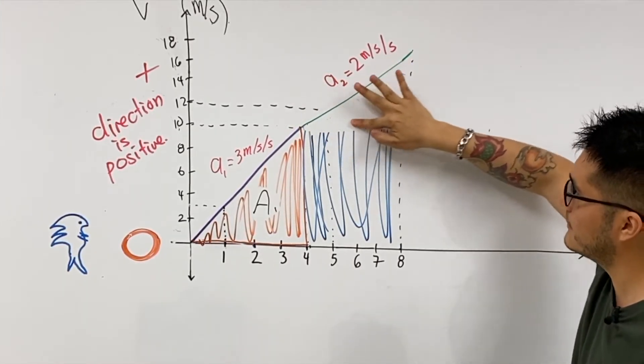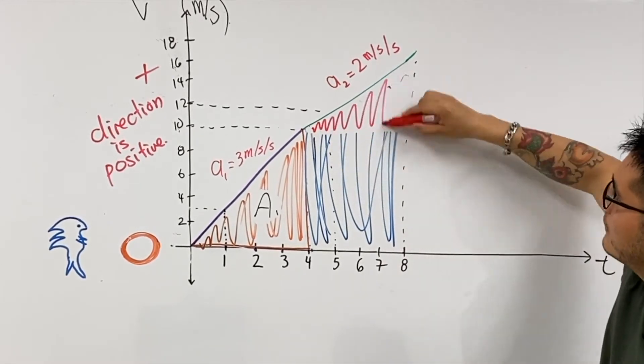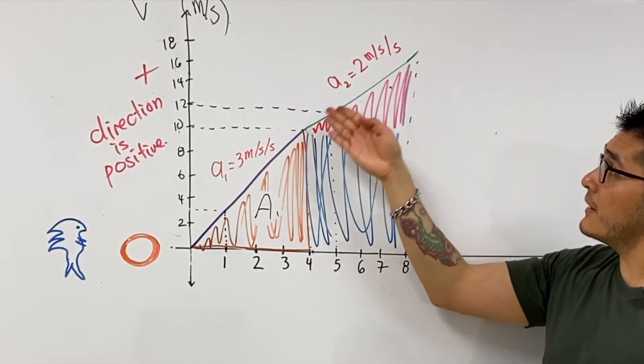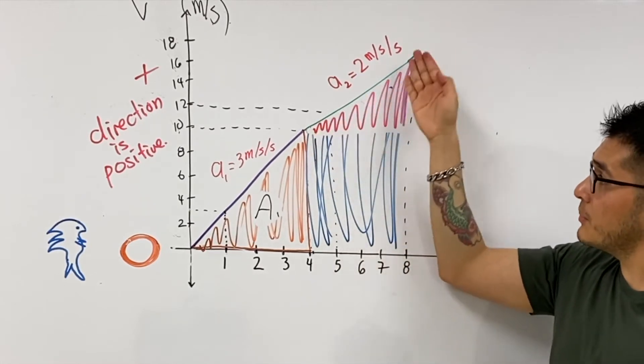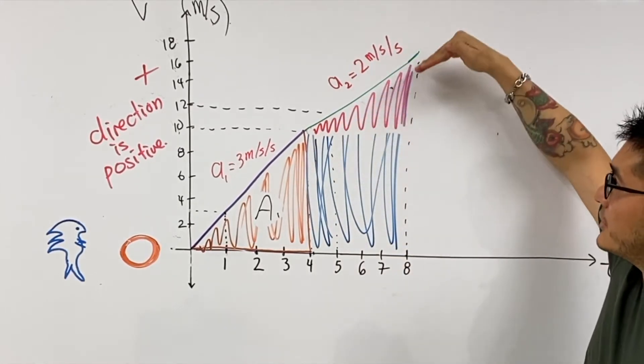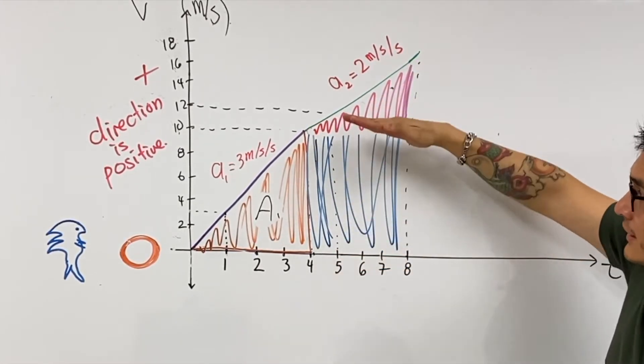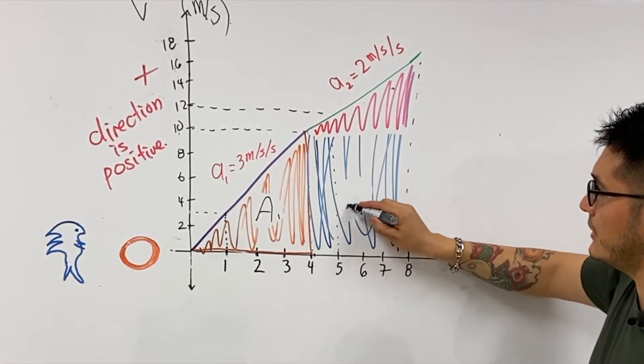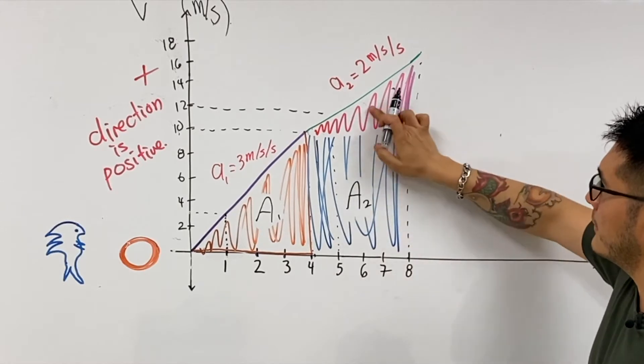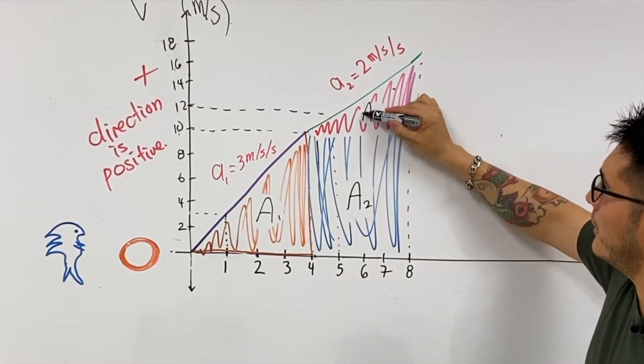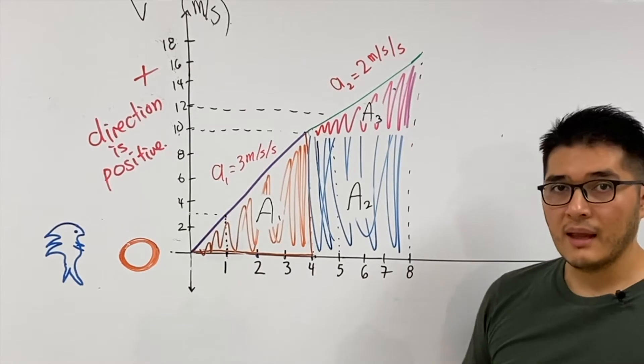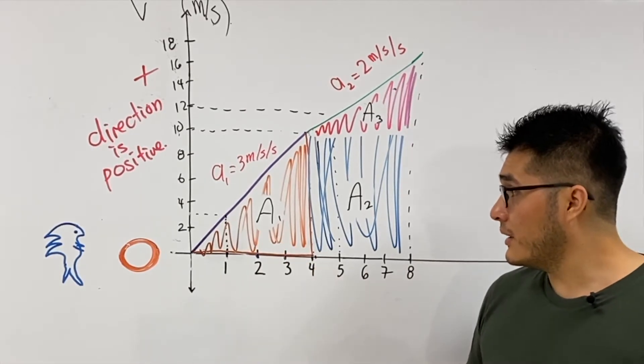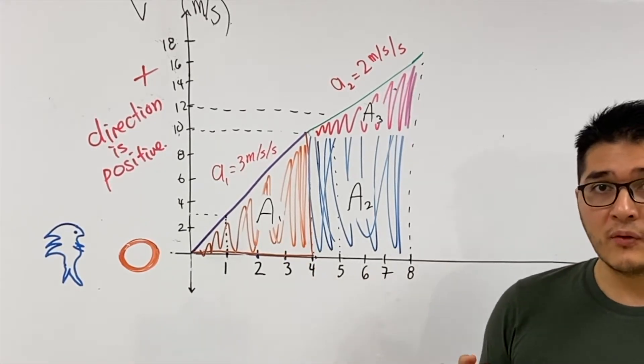What we're going to do for the second portion is split it up into two pieces. The area under the line for the second portion is going to be that of a triangular piece and a rectangular piece. Let's add some labels here. This would be area two, area three.